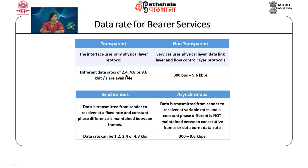Voice signals are also transmitted as data — obtained after digitizing, coding, encoding, appending error detection and correction bits, and encrypting the voice signals. Bearer services can be sent in synchronous or asynchronous mode. In synchronous mode, data is transmitted at a fixed rate with a constant phase difference maintained between frames. In asynchronous mode, data is transmitted at variable rates without a constant phase difference. Data rates for synchronous mode are 1.2, 2.4, or 4.8 kbps; for asynchronous, 300 to 9.6 kbps.